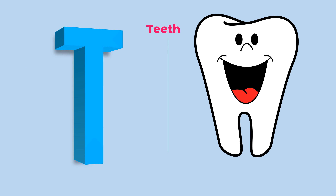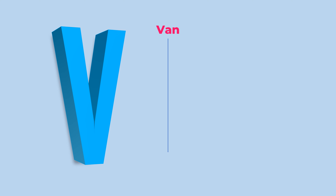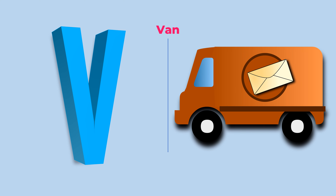T. For Teeth. U. For Umbrella. V. For Van. W. For Windmill.